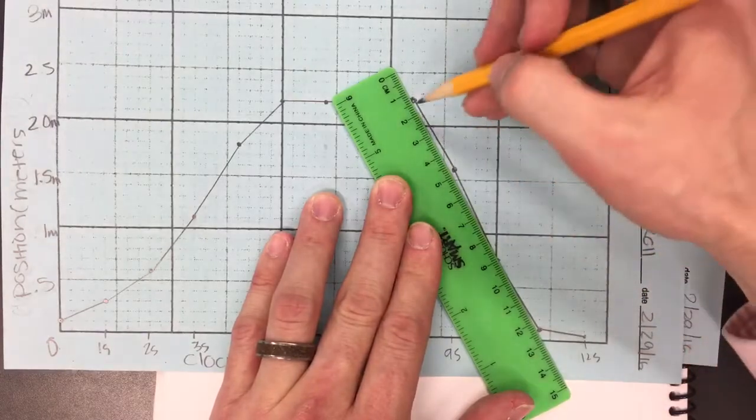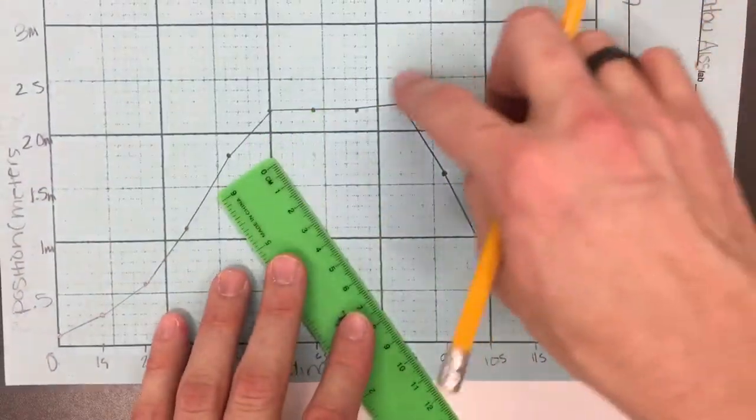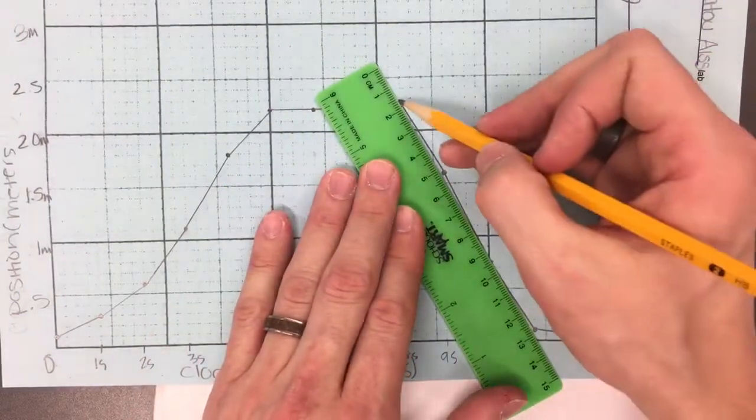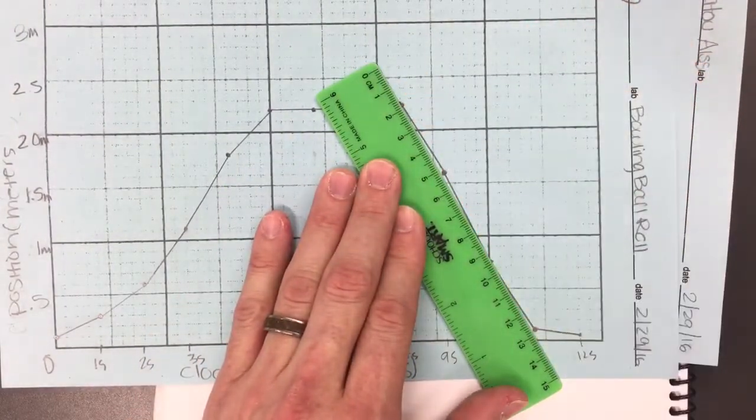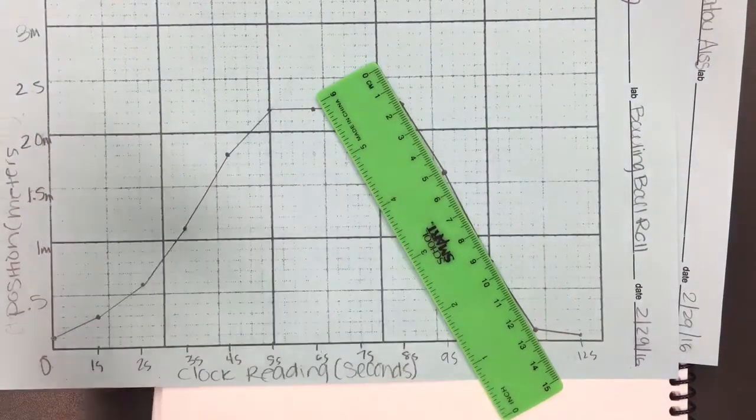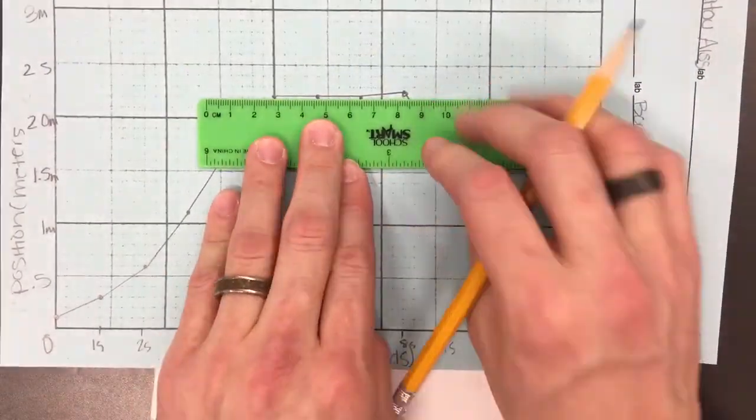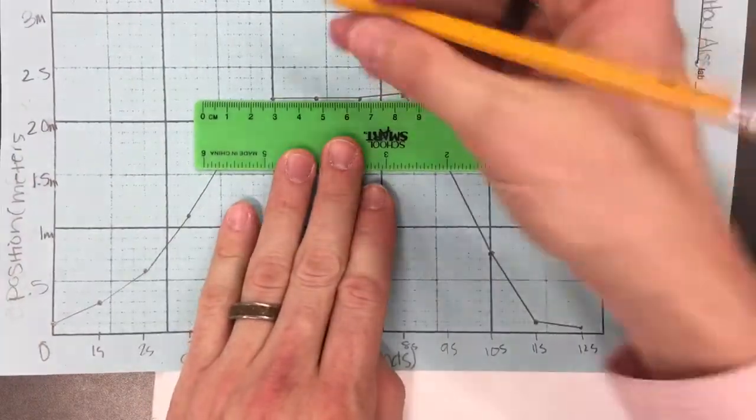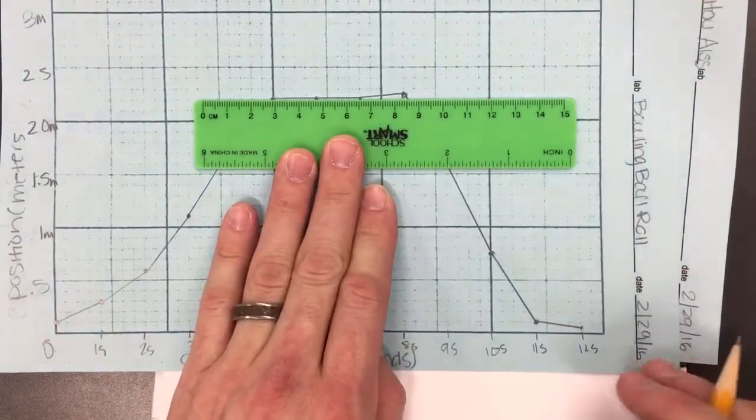So rather than connecting these points one to another, I would say this whole thing looks like constant velocity, and I would try to draw a straight line through all of those points, as close as I could get to all of them. This here, where the bowling ball is staying at a constant position—that is a velocity of zero—definitely looks like a straight line.